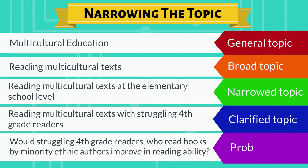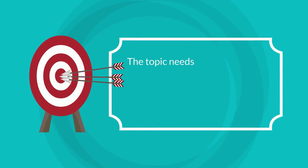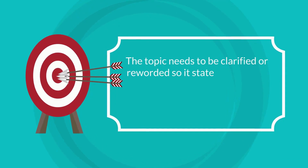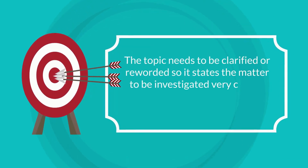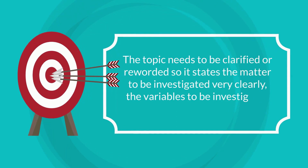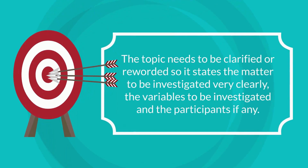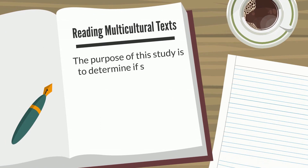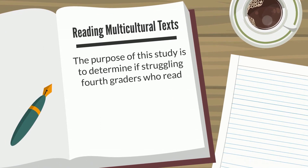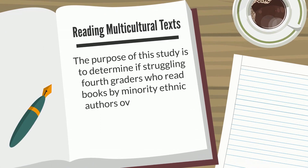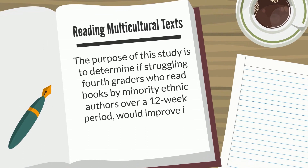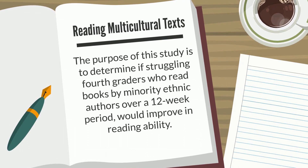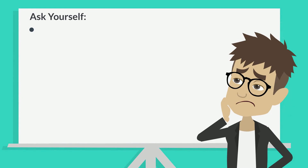Would struggling fourth grade readers who read books by minority ethnic authors improve in reading ability? That is the research problem. Second, the topic needs to be clarified or reworded so it clearly states the matter to be investigated, the variables, and the participants. The purpose of this study is to determine if struggling fourth graders who read books by minority ethnic authors over a 12-week period would improve in reading ability.